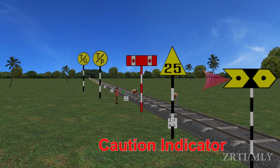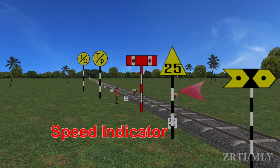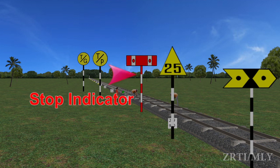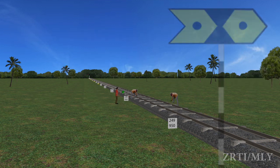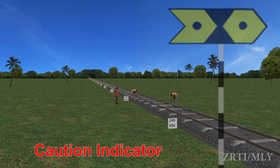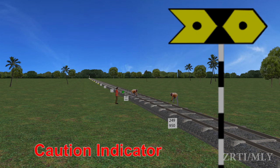The four types are: Caution Indicator, Speed Indicator, Stop Indicator, and Termination Indicators. The Caution Indicator is a rectangular board painted yellow, having a conic shape at one end and a fish tail at the other end. It indicates the Loco Pilot about approaching speed restrictions or stop spot.